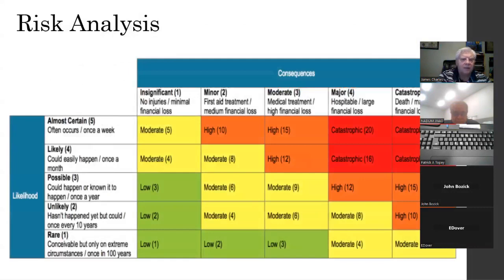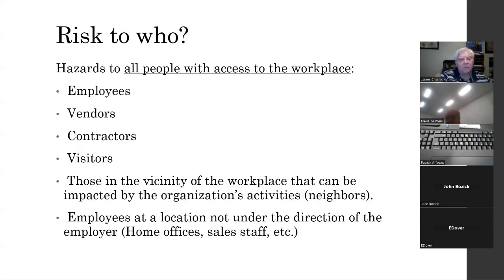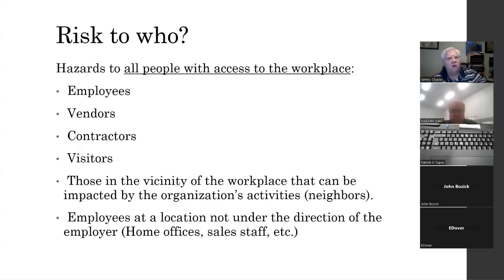You've all seen some type of a risk matrix — that's nothing new. But we need to look at hazards relative to employees, vendors and contractors, and anybody that has access to the workplace. We have to demonstrate we've identified hazards and potential risk relative to them. It can include people in the vicinity of the workplace. If you're working with a big chemical manufacturing company, you may have large tanks, toxic chemicals, things that could create explosions — and you need evidence that you've considered and identified those hazards.